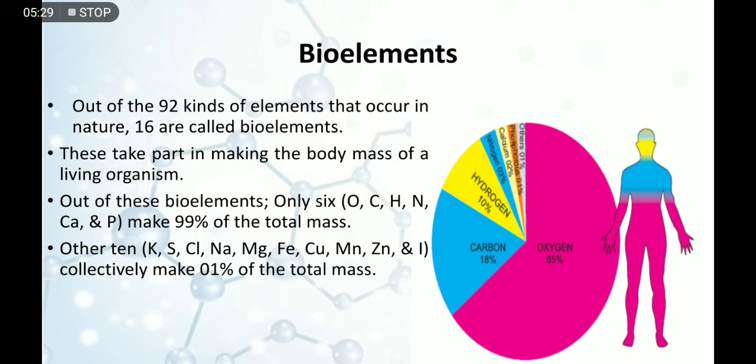Out of these bio elements, only 6 make 99% of total mass, and the other 10 collectively make 1% of total mass. If we look at the body mass composition: oxygen, carbon, hydrogen, nitrogen, calcium, and phosphorus.